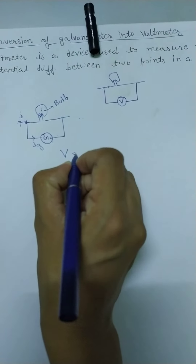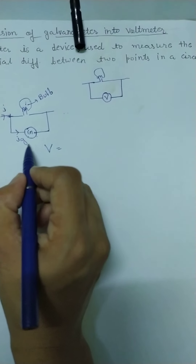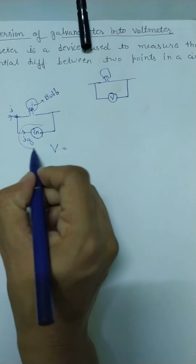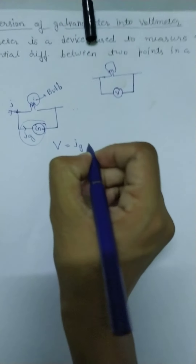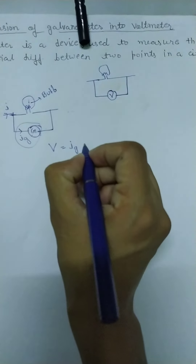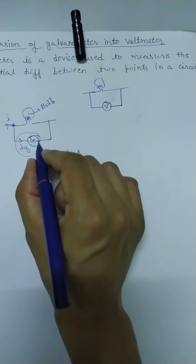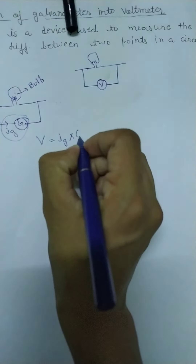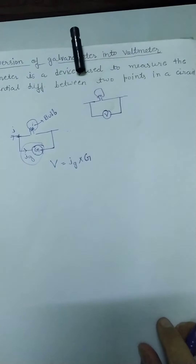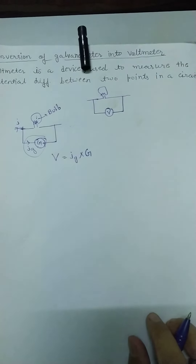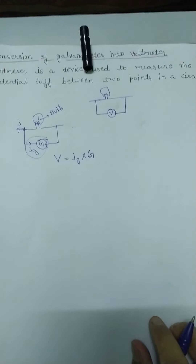To students, V equal to IR. Galvanometer ke across potential difference dekhein to kya hoga? V = IG into G. Maine resistance of galvanometer ko G se denote kiya. To galvanometer ka resistance G hai, aur yeh ho gaya hamare paas potential difference.